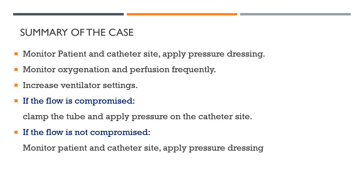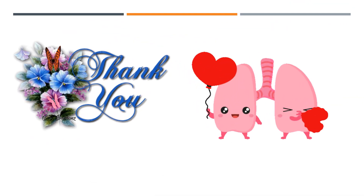Summary: monitor the patient and cannula site, apply pressure dressing, and check the cannula insertion site daily. Monitor oxygenation and perfusion frequently — if there are problems with oxygenation or perfusion, consider bleeding. If flow is compromised, clamp the tube, apply pressure on the cannula site, and escalate backup ventilation. If flow is not compromised, monitor the patient, apply pressure dressing. Thank you — any questions or inquiries can be posted in the comments below.